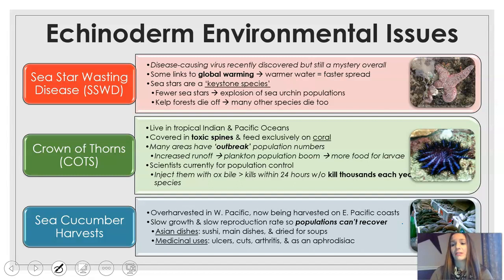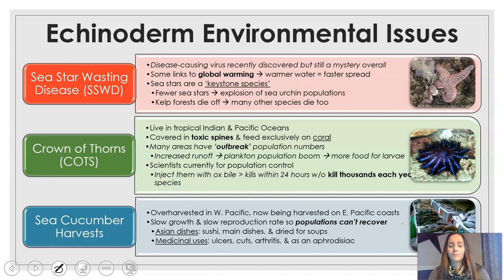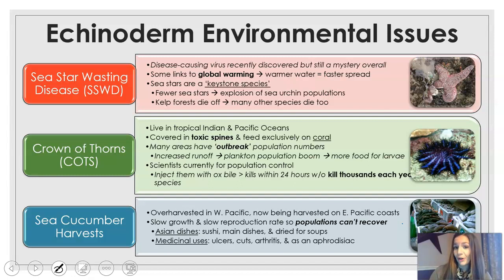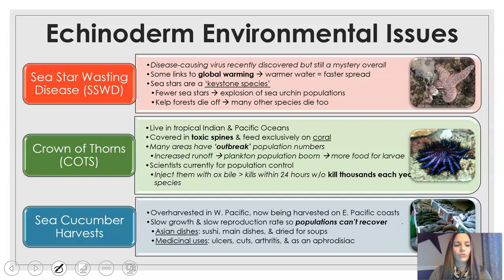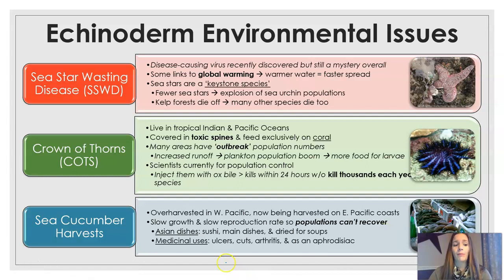Lastly, sea cucumbers have been overharvested in the Western Pacific, and now harvesters are coming to the Eastern Pacific coast — North and South America — because they ran out over there. The problem is they grow and reproduce slowly, so populations can't recover. They are very common in lots of Asian dishes and sushi, and also used for medicinal purposes, so we are really causing serious problems with sea cucumber populations.